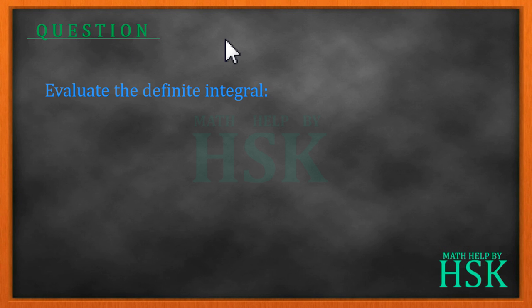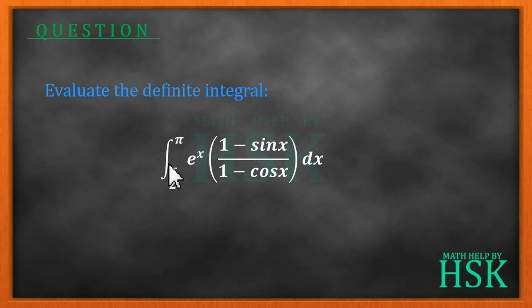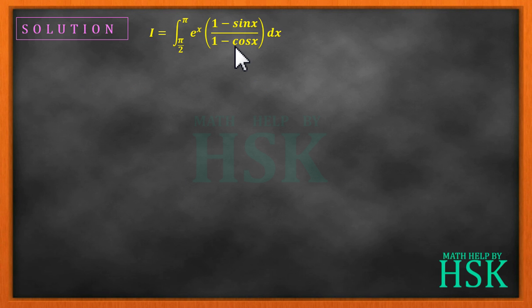Hello friends. The question is: we have to evaluate this definite integral of e to the power of x into (1 minus sin x) upon (1 minus cos x) with respect to x, from the limit pi by 2 to pi.